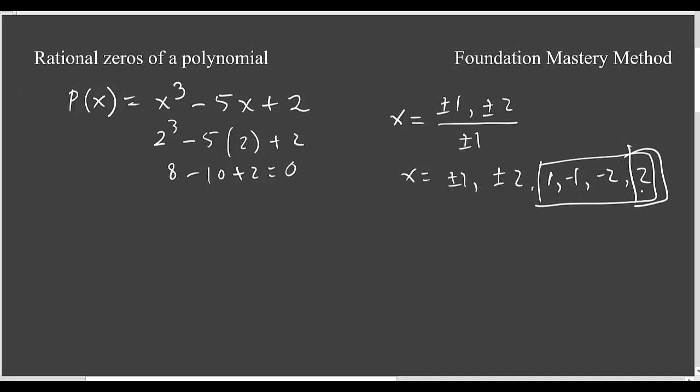Now you can apply synthetic division. Write a 2 here and then list the coefficients. So first, x³ has 1, x² is missing so put a 0, then you have -5, after that 2. Our synthetic division says you plug 1 here, pull 1 here and multiply by 2, add together, multiply again, put it here. Then you get -1, multiply, you get -2. That's 0. That is expected when you divide by 2, you should get remainder 0.